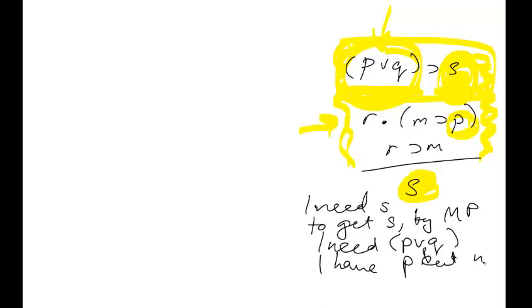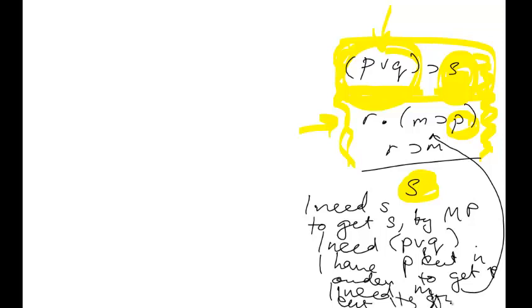So we're saying I need S. To get S by modus ponens, I need P or Q. I don't have P or Q. But I do have P. But in order to get P, I need M. Why? Well, I've got M here by modus ponens. That would give me P. But it's trapped inside a conjunction, the conjunction of R and M→P.